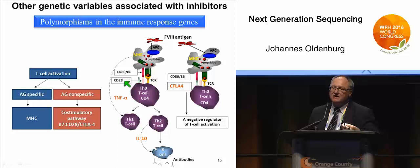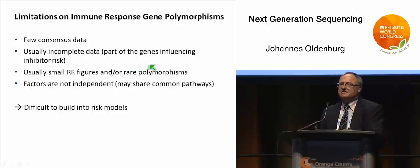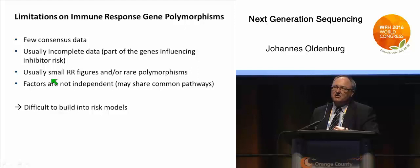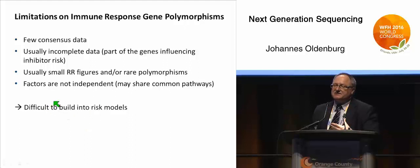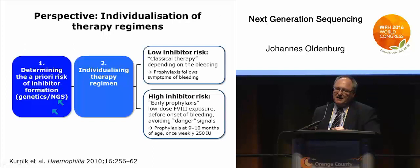The immune system acts as a cascade involving many genes. With respect to immune response gene polymorphisms, there are only few consensus data. The data are usually incomplete—different cohorts have had different genes analyzed. The relative risk figures of those genes are small, each contributing only very little to the risk of inhibitor formation. Furthermore, factors are not independent but may share common pathways, making it very difficult to build this genetic information into risk models.